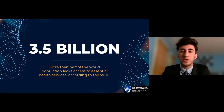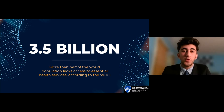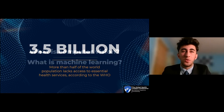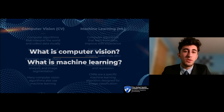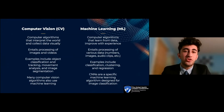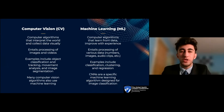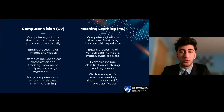New research in computer vision and machine learning applications shows promise to revolutionize the field of global health. But before we get into just how they can achieve that — what even is computer vision, and what even is machine learning? Computer vision is a class of algorithms which, as the name suggests, visually interpret the world through processing of images and videos. This often involves extracting numerical data from visual data, such as object detection, object classification, or object tracking.